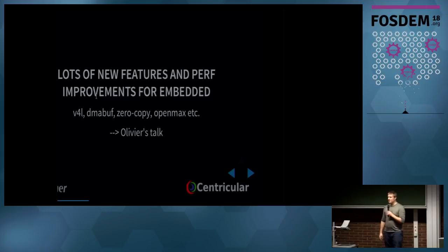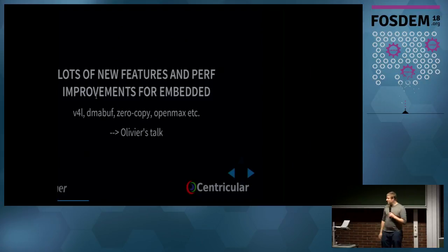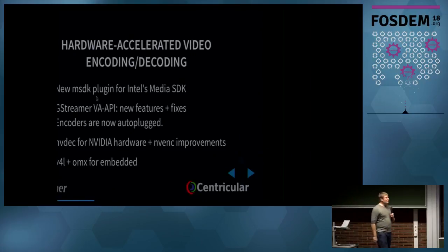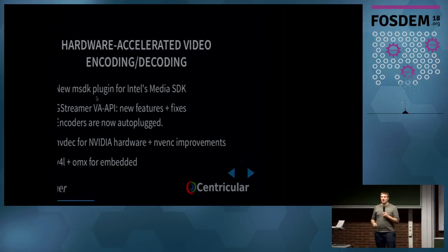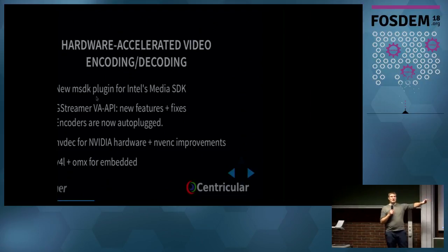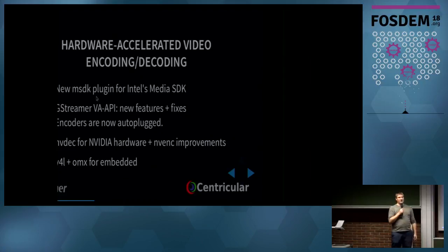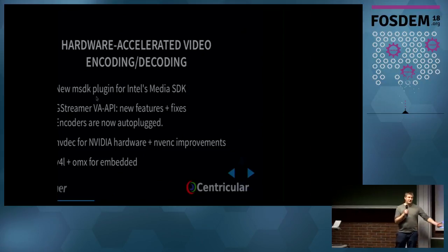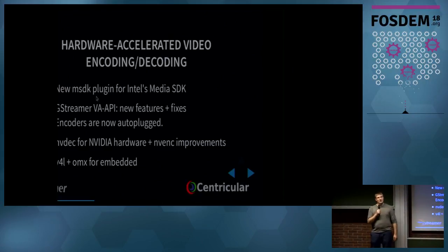There are loads of new features and performance improvements on embedded — Video4Linux, OMEX, DMA buf, zero copy — Olivier has a talk right after this one covering all of that. For hardware accelerated video encoding and decoding, we have lots of that. There's a new MSDK plugin for Intel's Media SDK providing video encoding and decoding on Intel hardware, working on both Linux and Windows. There's also GStreamer VAAPI, which is based on an open-source stack but only works on Linux, and it has seen loads of new features and fixes. We have a new NVDEC plugin for the NVIDIA graphics stack as well.